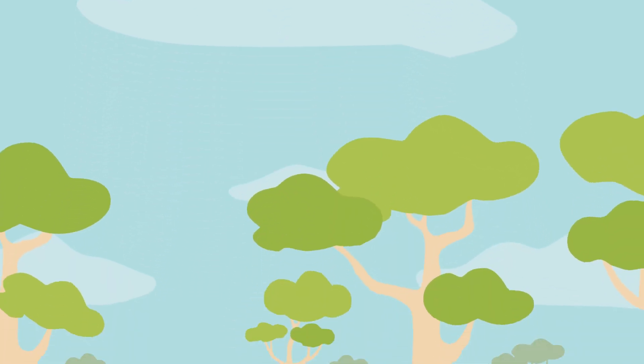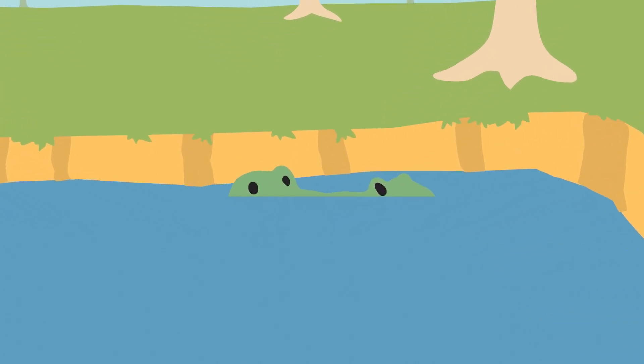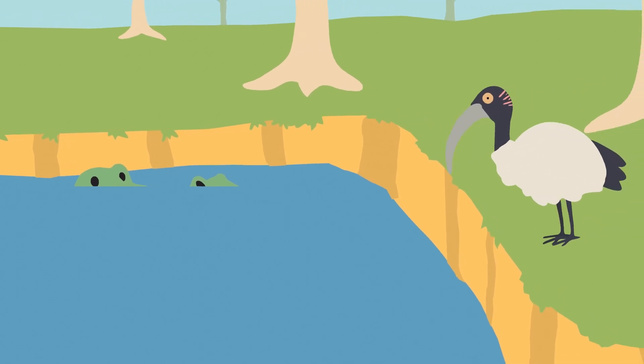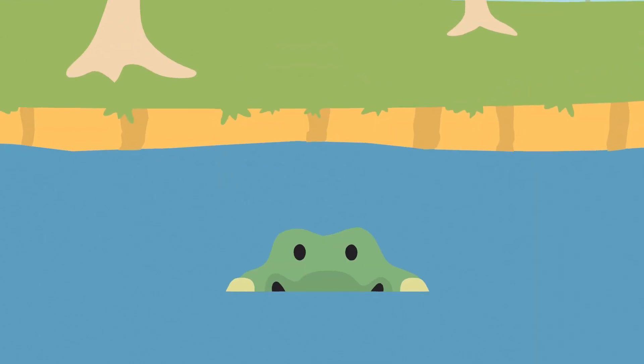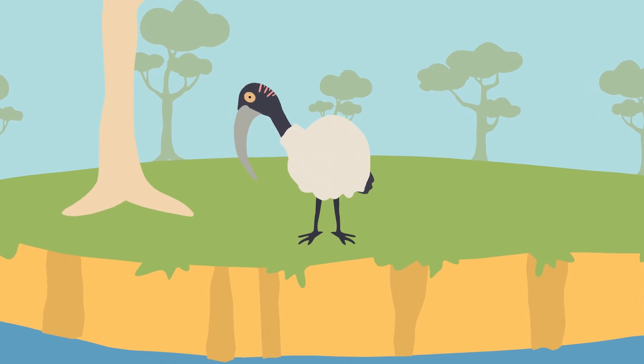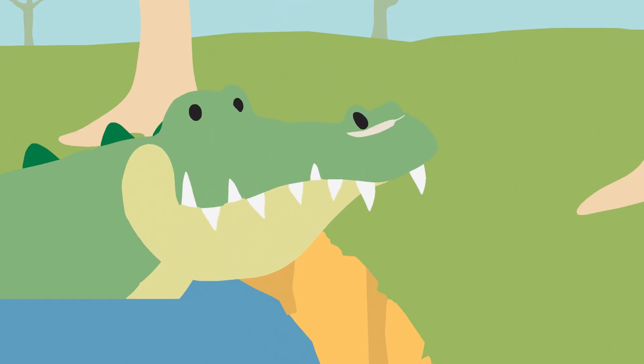Crocodiles are a sneaky bunch. They have a special way of getting their lunch. With just their eyes and nose above the water, they wait for their meal to get a little closer. And when the time is right, they move real fast and make their strike. They catch their prey with one big bite. What a crazy sight!